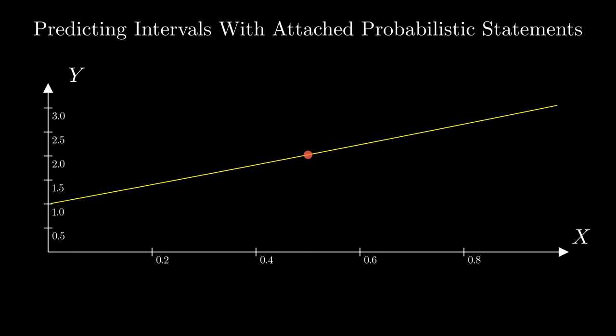Imagine the same point prediction that we had earlier, but this time instead of providing just a specific value as our prediction, we use the historical data to predict an interval or a range of values.